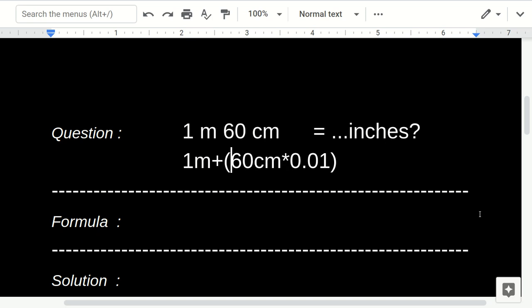60 centimeters times 0.01. 1 centimeter equals 0.01 meter. We need to multiply it like this because we want to convert both numbers to meters. So this equals 1.6 meters.